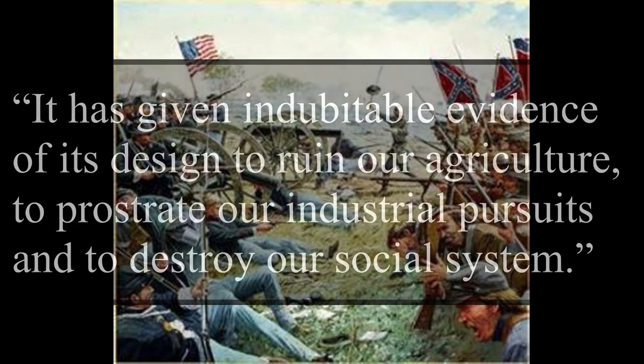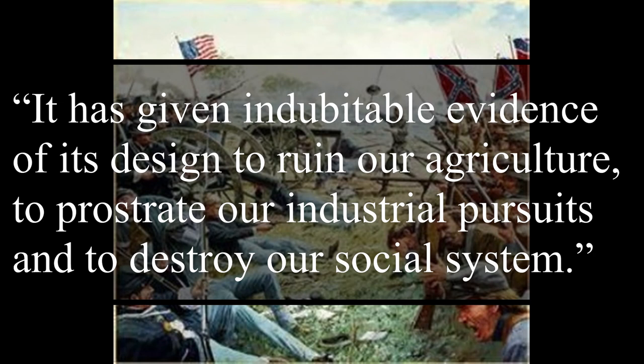Mississippi's declaration further states: 'It has given indubitable evidence of its design to ruin our agriculture, to prostrate our industrial prospects, and to destroy our social system.' They expressed fear that their entire agricultural system, economy, industry, and social structure would collapse if slavery was weakened further or abolished — a prospect they viewed as imminent now that Lincoln, a Republican opposed to slavery, was in office. Therefore, they viewed their system as at its end and were trying to hold on to it as long as they could.